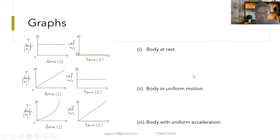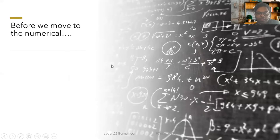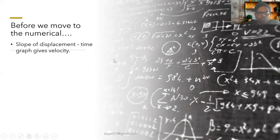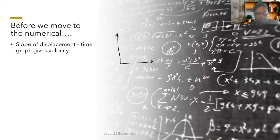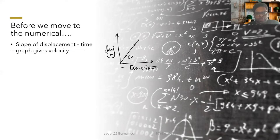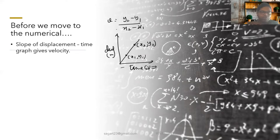Before moving to numericals, here are some key formulas. The slope of the displacement-time graph gives us velocity. If you take two points (x1, y1) and (x2, y2) on a displacement-time graph, velocity equals the difference of y divided by the difference of x, i.e., (y2 − y1) / (x2 − x1).